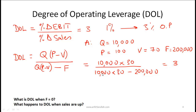This gives us $300,000 divided by $100,000, which equals 3. So at a quantity of 10,000 units, the degree of operating leverage is 3 — meaning if the company can increase sales volume by 1%, operating profit will change by 3%. Note that degree of operating leverage changes with different quantities.